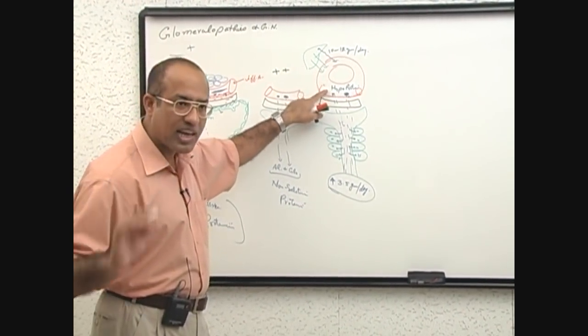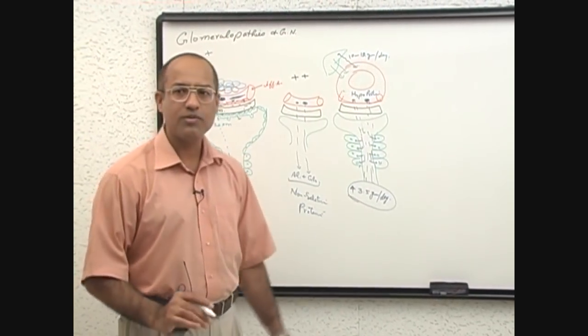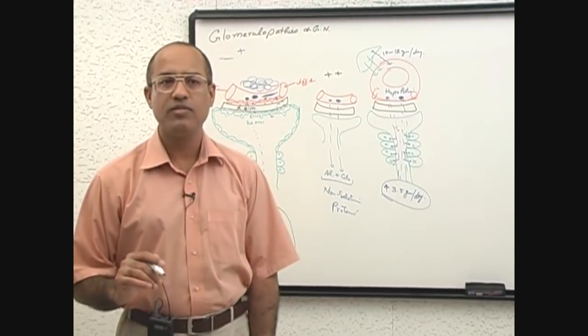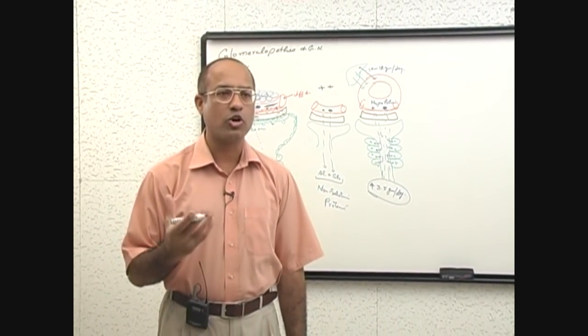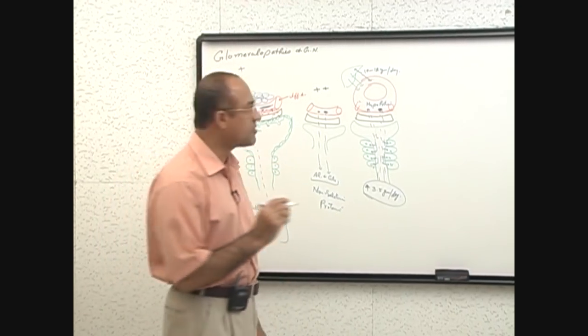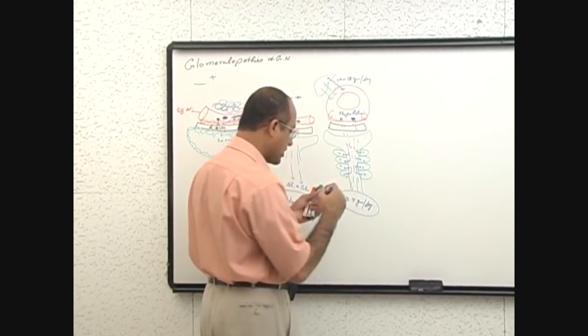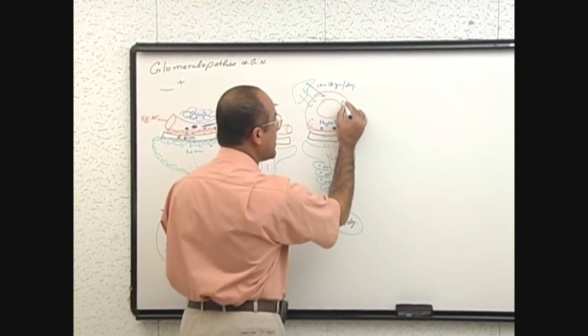When plasma protein levels go down, plasma proteins do a lot of functions. One of the very important functions is the plasma proteins maintain the osmotic pressure or oncotic pressure within the circulatory system.